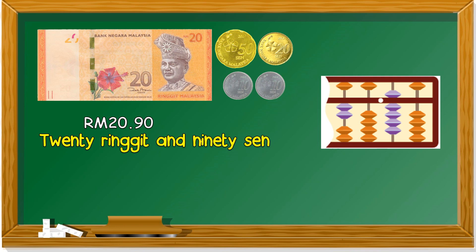We use 4 rows. The first row on the left: 2, then 0. Remember the point — you have to put a point there. Then this one is 9, 0. Remember the point: the point separates the ringgit and the cent. So this is how you represent 20 ringgit and 90 cent. Remember how to write it as well.